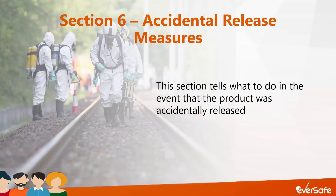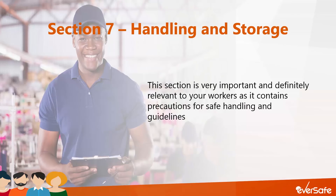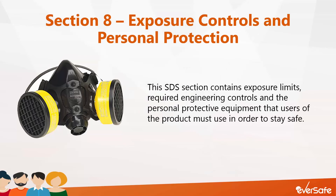Section 6 tells what to do in the event that the product was accidentally released, and includes information like required protective equipment for cleanup, emergency procedures, and methods and containment for cleanup. Section 7 is very important and contains precautions for safe handling and guidelines for safe storage of the product — it should be thoroughly reviewed by workers before using a product. Section 8, similar to Section 7, is extremely important, should always be reviewed by a worker before using a product and by you as an employer to determine what controls must be put in place. It contains exposure limits, required engineering controls, and the personal protective equipment that users of the product must use in order to stay safe.